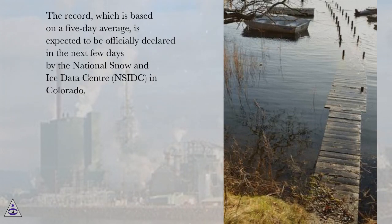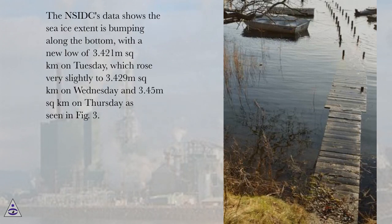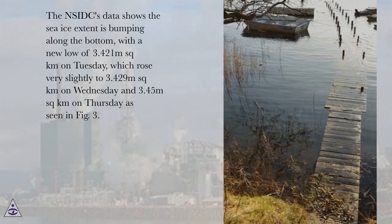The record, which is based on a five-day average, is expected to be officially declared in the next few days by the National Snow and Ice Data Center (NSIDC) in Colorado. The NSIDC's data shows the sea ice extent bumping along the bottom, with a new low of 3.421 million square kilometers on Tuesday, which rose very slightly to 3.429 million square kilometers on Wednesday and 3.45 million square kilometers on Thursday, as seen in Figure 3.